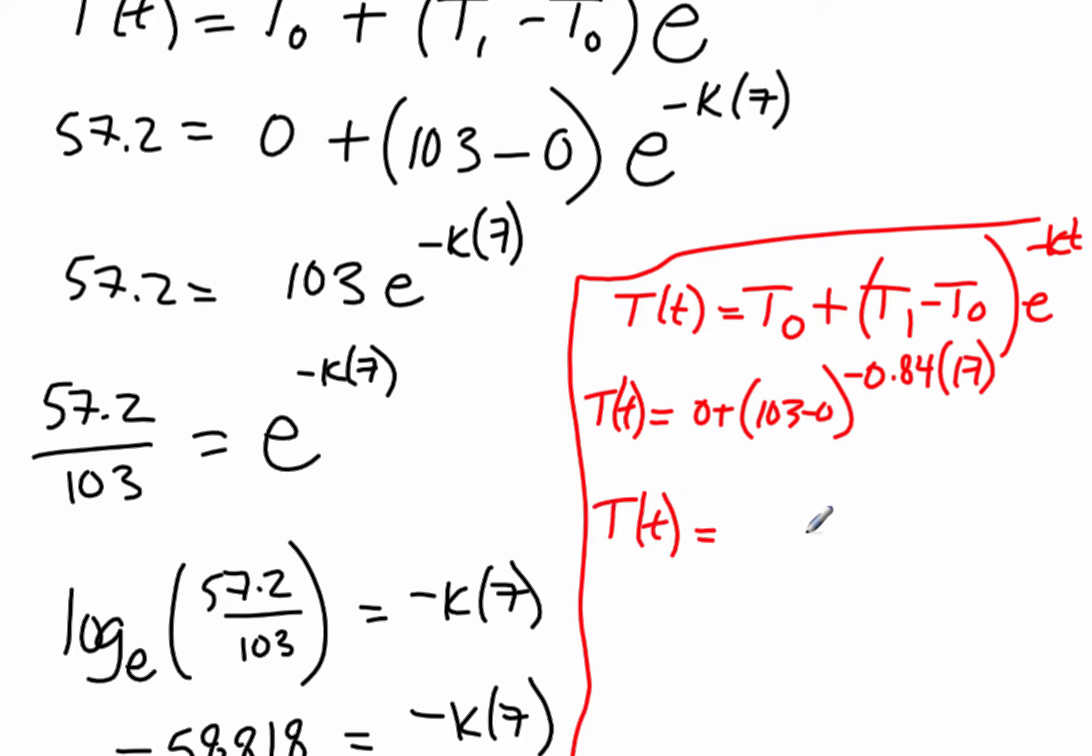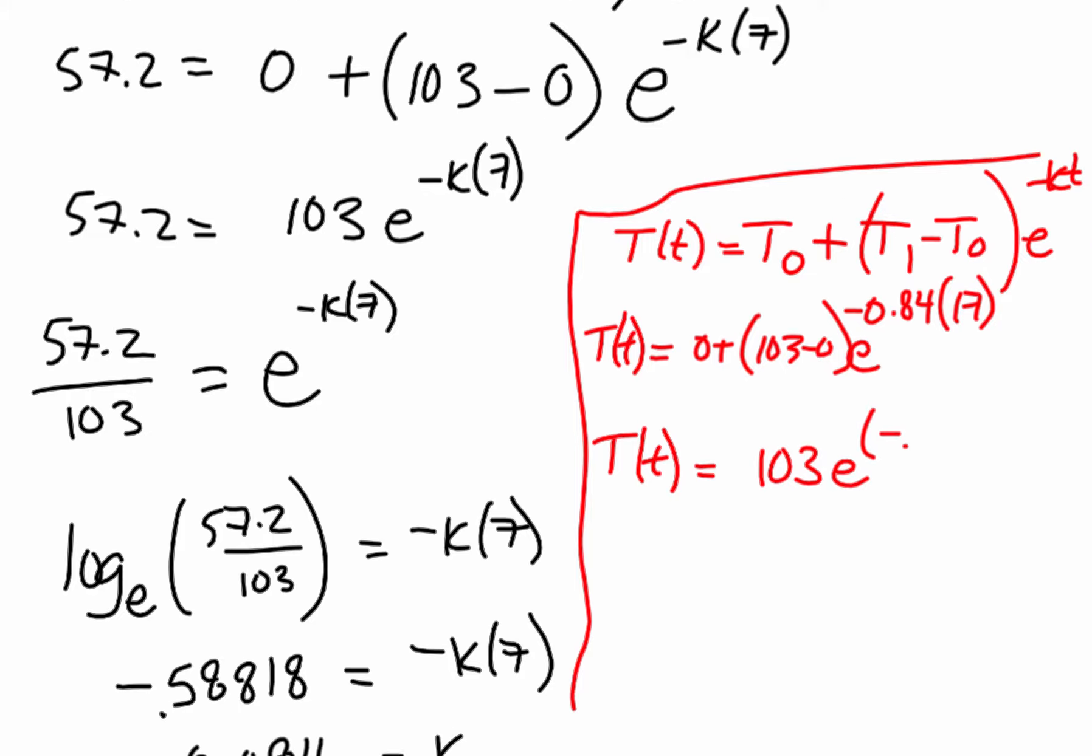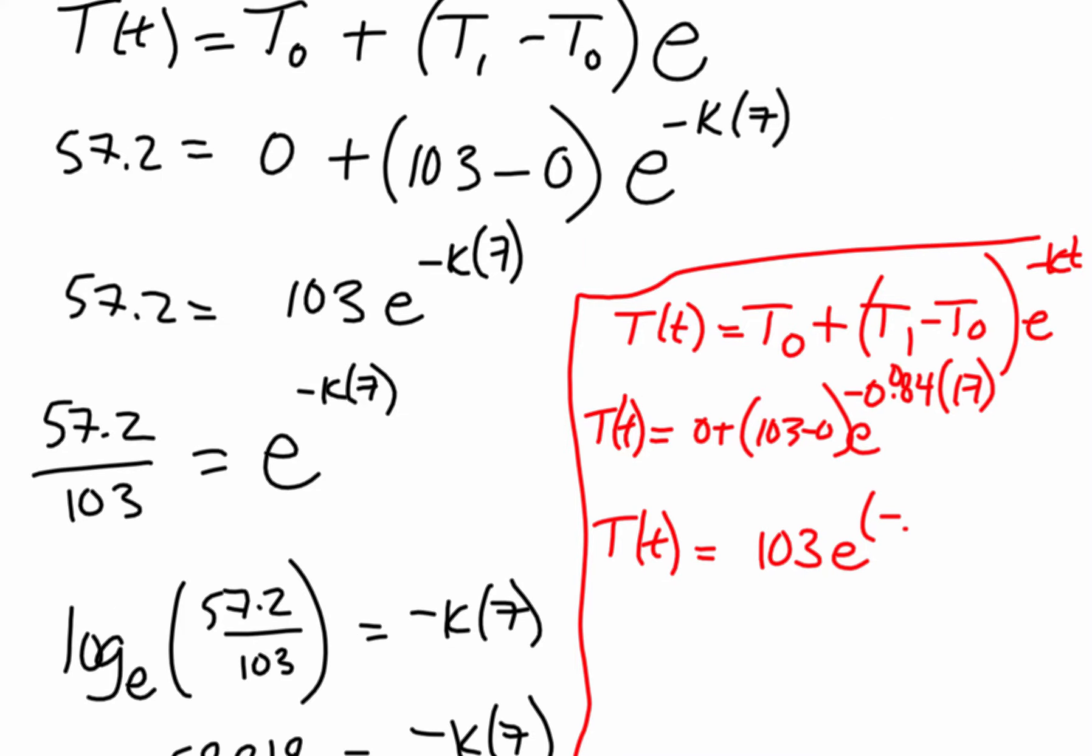So temperature after a given time is equal to, this will be 103 times, oh I forgot my e here. So here I go. So e to the negative point, I even wrote that down wrong. 0.084. Negative 0.084 times 17. Be careful with this one when you're putting that in your calculator. You need to put all that in brackets. So here I go. So second ln. So e to the, in brackets, negative 0.084 times 17.